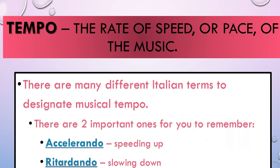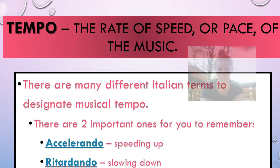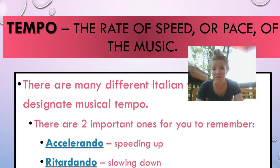Sometimes a song that you like might gradually get faster or slow down. The word to describe getting faster is accelerando — think of it like the acceleration pedal in your car. You're speeding up whenever you use that pedal, you're accelerating. And retardando means slowing down the tempo. Changing the speed makes the music more exciting.